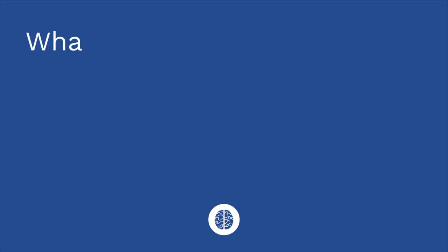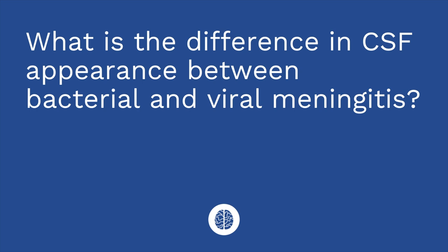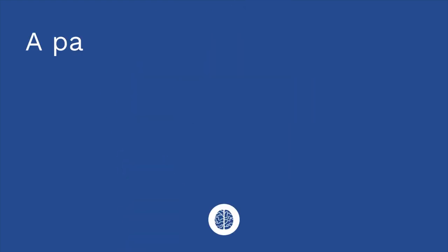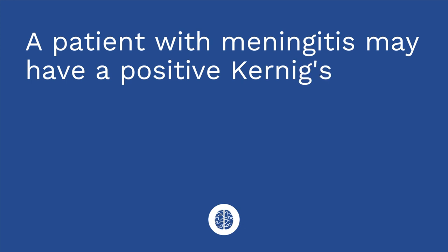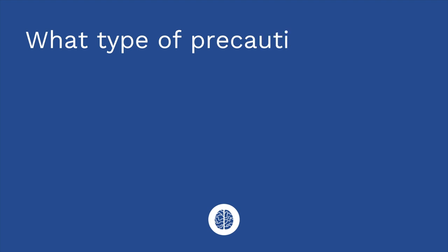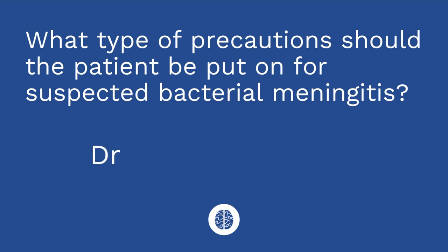It's quiz time! We have three questions. First question: what is the difference in CSF appearance between bacterial and viral meningitis? The answer is the CSF will be cloudy with bacterial meningitis and clear with viral meningitis. Question two: a patient with meningitis may have a positive Kernig sign and a positive Brudzinski sign — true or false? The answer is true, and those were the two signs I demonstrated. Question three: what type of precautions should the patient be put on for suspected bacterial meningitis? The answer is droplet precautions.